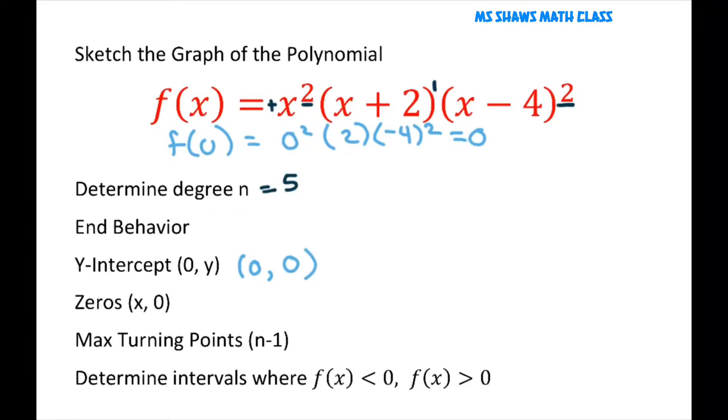And for our x-intercepts or zeros, you let y be 0. So this could be 0, this factor would be negative 2, and this factor would be 4. So our zeros are at 0, negative 2, and 4.